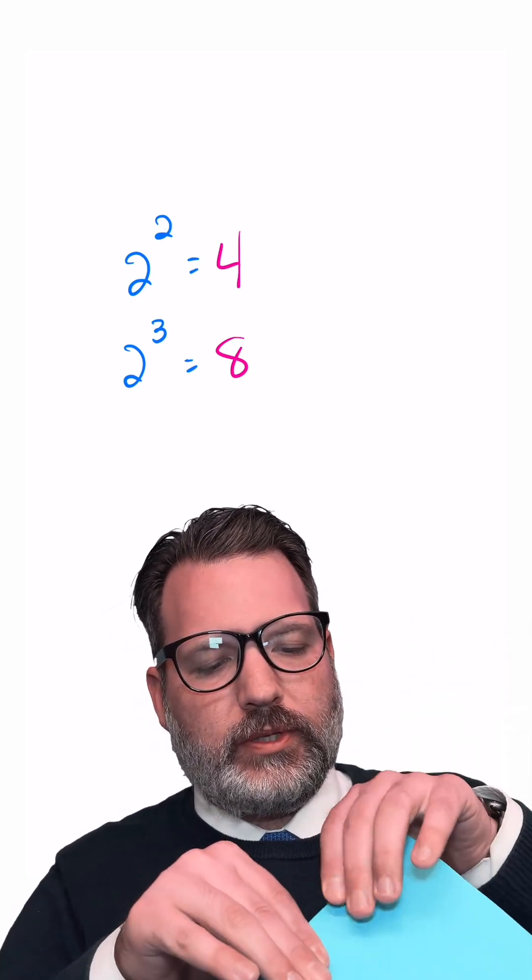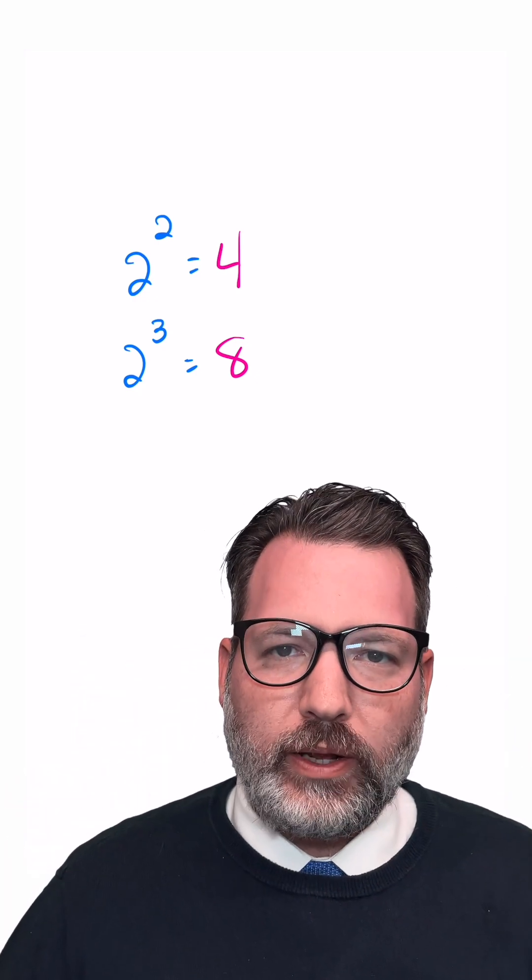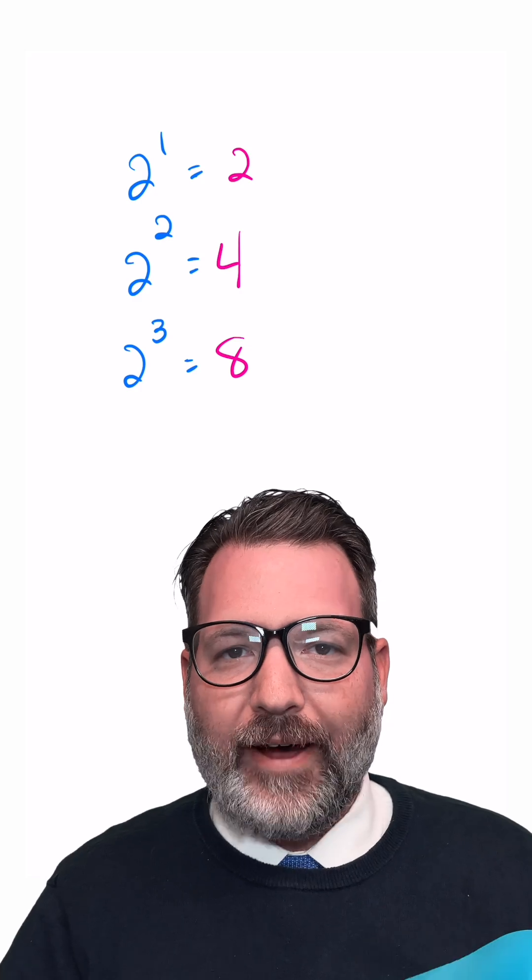If we wanted to go backwards and compute something like 2 to the 1st, we would only fold the piece of paper in half once, and we would see that that gives us back just 2 sections to the piece of paper after 1 fold.